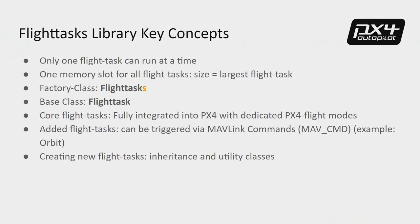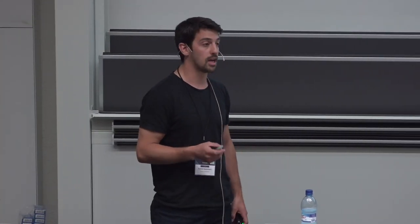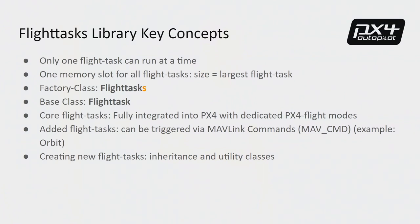The flight task library can have multiple tasks, but only one task runs at a time. It also has only one memory slot, which has the size of the largest task — which further explains why there can only be one task at a time. The library has a factory class called FlightTasks with an S, which is the interface to the running task. With this factory class you can start, stop, or switch between tasks, and it provides you the output of the running task, including your position set points.